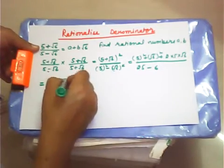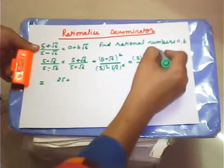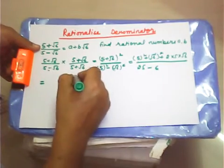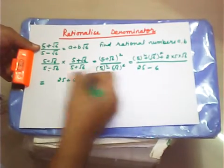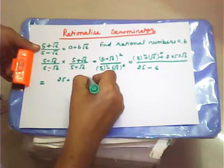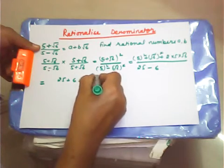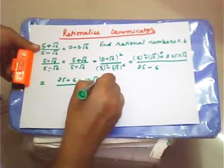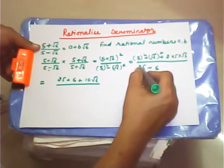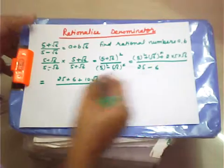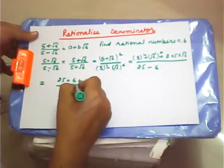The numerator simplifies to 25 plus 6 plus 10 root 6. The denominator becomes 25 minus 6, which equals 19.